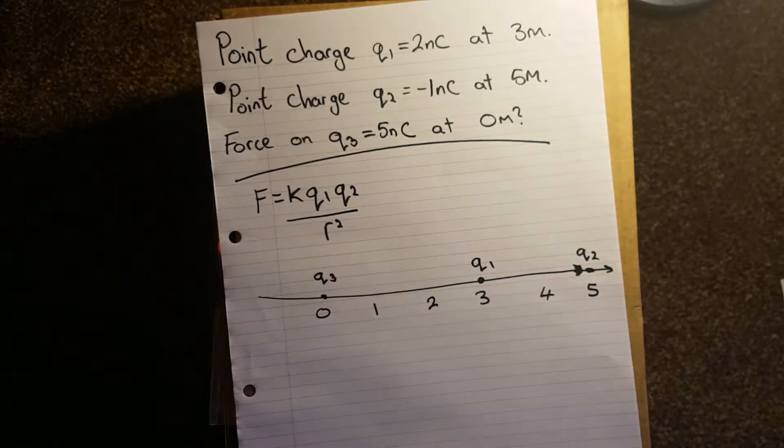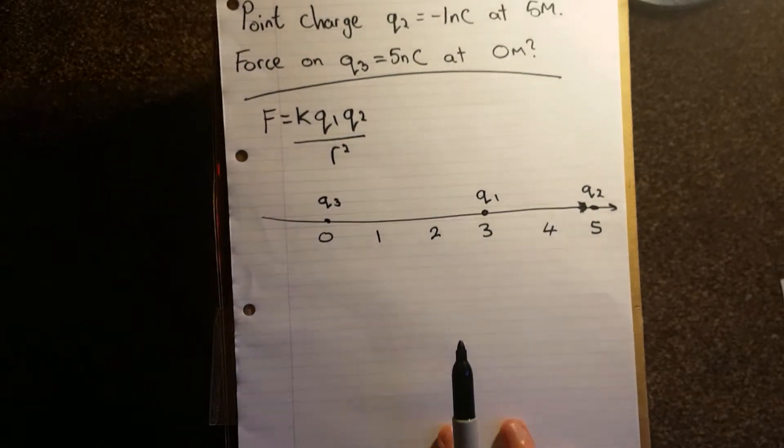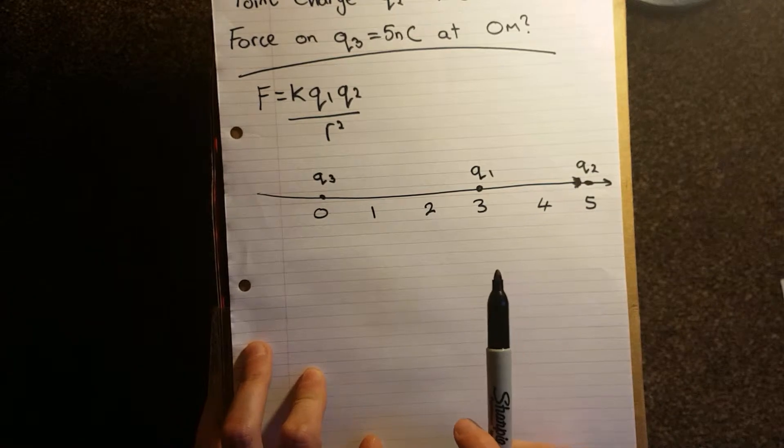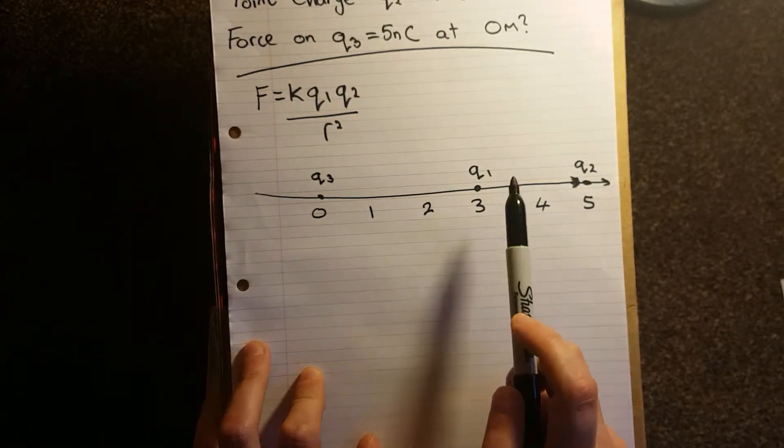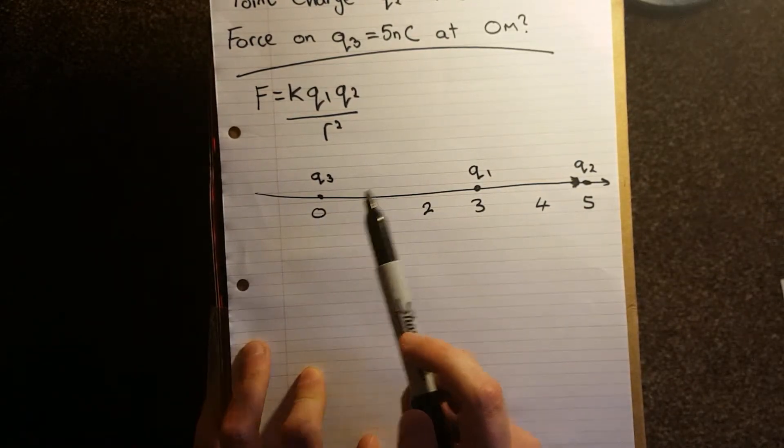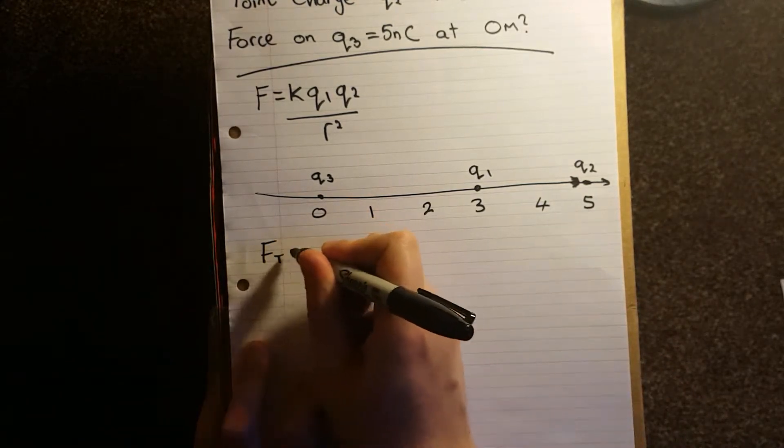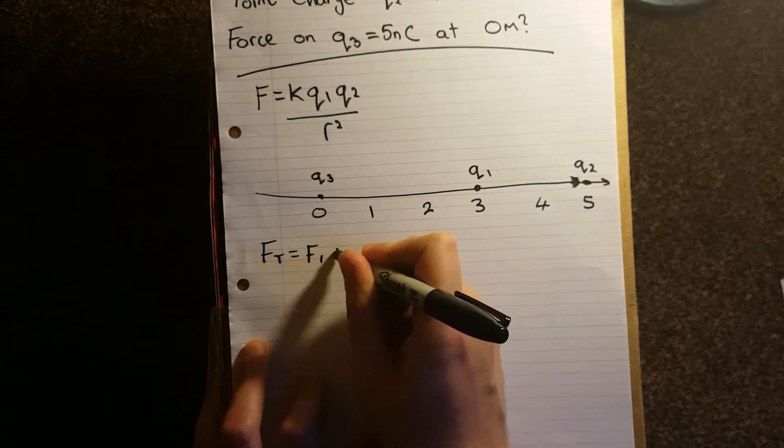The total force acting on Q3 in this case is additive. So it'll be the combination, the sum, of the force from Q1 acting on Q3 and the force from Q2 acting on Q3. F1 plus F2.